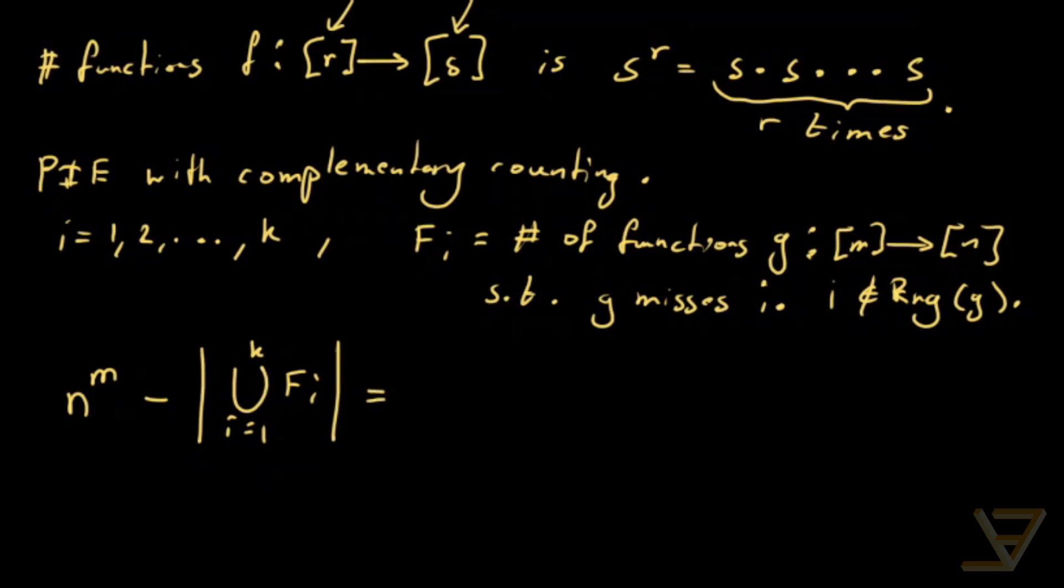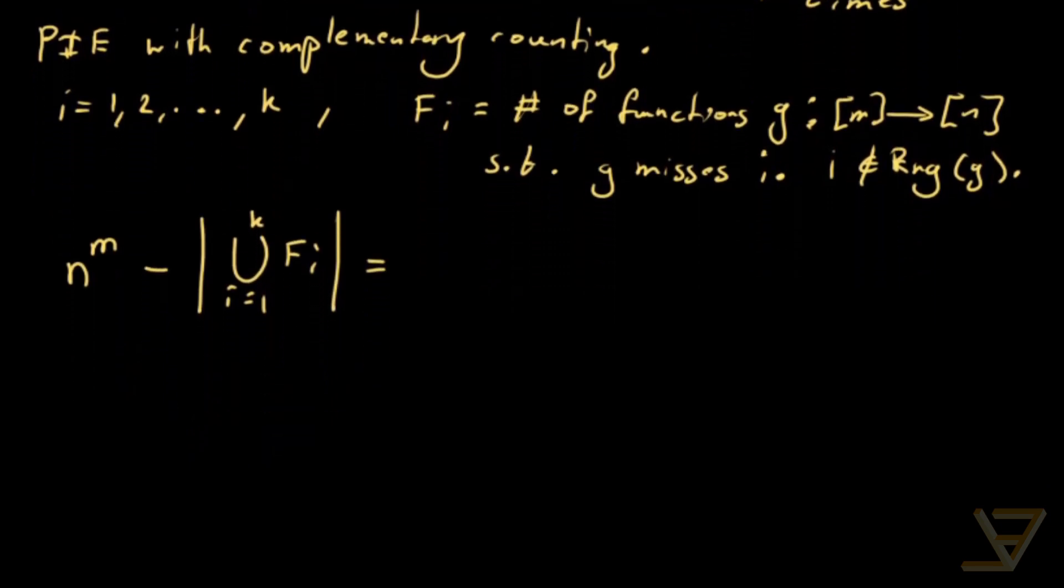And now, as you can tell, we're going to invoke the principle of inclusion exclusion. That tells us that this is n to the power of m minus the sum i equals to 1 through k, negative 1 to the i plus 1, so alternating signs as before. And we have the inner sum here.